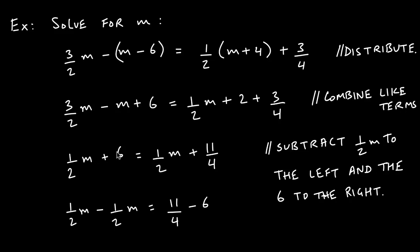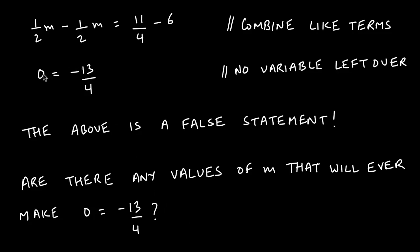Now we apply inverse operations. We subtract 1/2 m to move it to the left side, and move the 6 to the right, keeping all variables on one side and numbers on the other. This gives 1/2 m − 1/2 m = 11/4 − 6. Subtracting the like terms on the left gives zero. You should get negative 13/4 on the right.